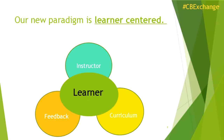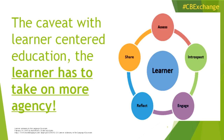In the new learner-centered paradigm, the learner is at the center of the equation, and everything that's done is to help that learner navigate through their learning path. And that means the learner has to take on agency. The learner at the center has to be introspective — they have to know where they want to go, they need to engage with the learning objects that work best for them, reflect on what they've learned, and share and collaborate in the public square to socialize their learning.